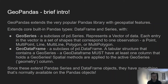GeoDataFrames extend the pandas DataFrame — a tabular structure with columns and rows — but for a GeoDataFrame to be valid, there must be at least one GeoSeries column that has a geospatial data type. So those are the two main data types in GeoPandas: the GeoSeries, which is a vector, and the GeoDataFrame, which is more like a matrix.